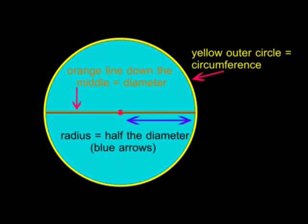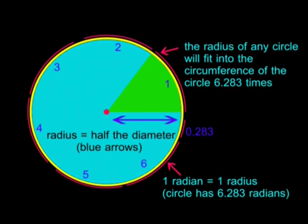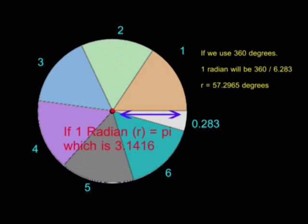The outer edge or ring of the circle, as shown in yellow, is the circumference. If you draw a line down the center of a circle, you get the diameter, as shown in orange, and half the diameter is called the radius, shown by the blue arrows. If you take any circle, the radius of that circle will fit into the circumference of the circle 6.2831 times. We call the angle created by this value the radian. A circle has 6.2831 radians. You must remember that the radian is not based on any physical size or dimensions. It is simply the ratio between the circumference of a circle and the radius of that circle.